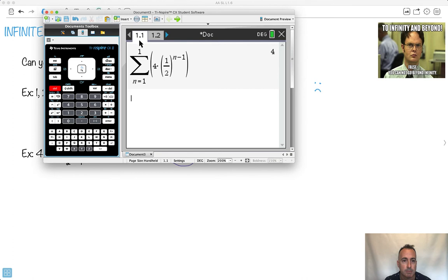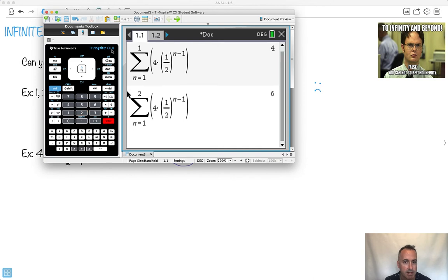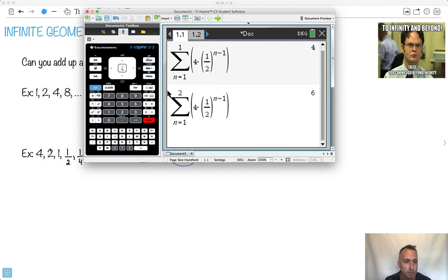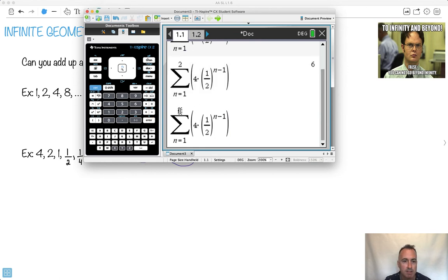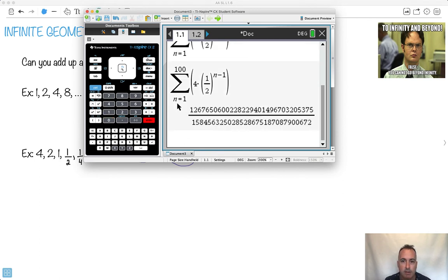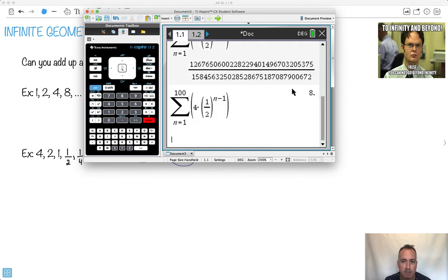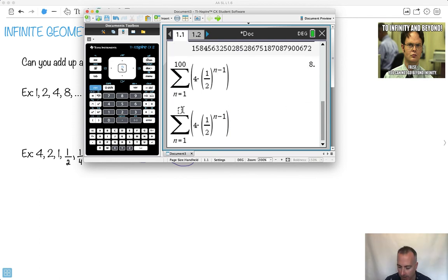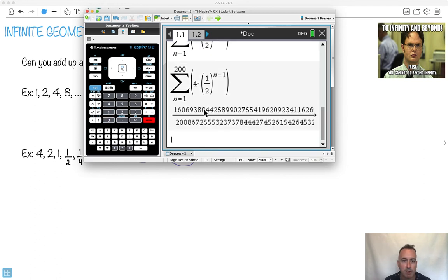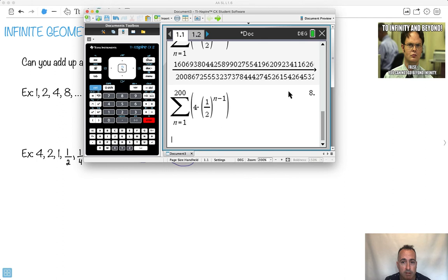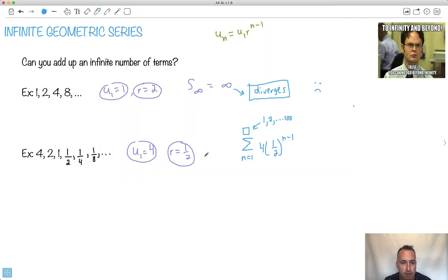But what if I change this number to 2? Now I'm adding up the first two terms, so 4 plus 2 is 6. What if I make this number 100? Let's see what I get. I get something around 8. What if I do 200? I get some number that gives me roughly 8. So actually, the sum gives me 8. We see the series converges. This thing converges, which means it gives me one specific number.